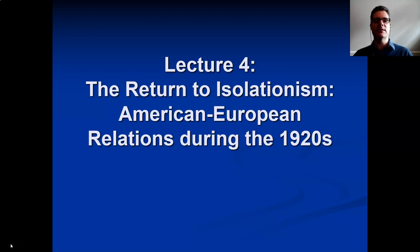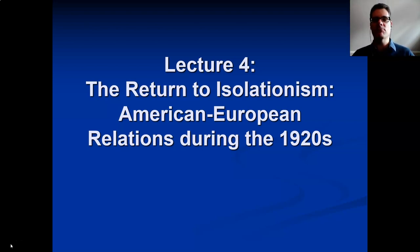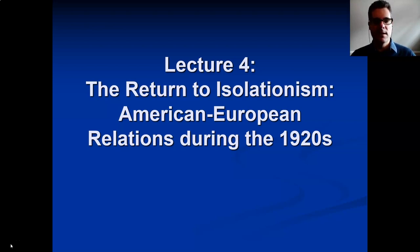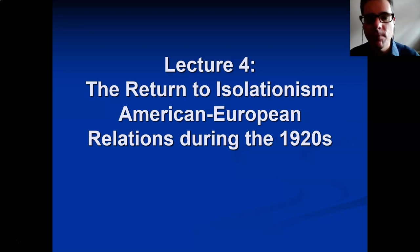Wilson basically adopted an all-or-nothing approach, insisting it had to be his treaty and nothing but his treaty. He essentially required the Republicans to accept the Versailles peace agreement in its entirety, especially the League of Nations, which was very much his own brainchild — he was 100% committed to it.